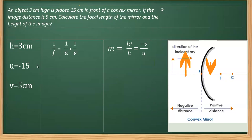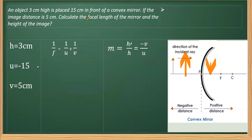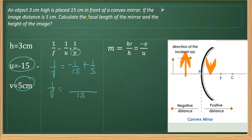We have to calculate the focal length using the mirror formula. Plugging in the values: 1/f = 1/v + 1/u, so 1/f = 1/5 + 1/(−15). The LCM is 15, giving 1/f = 3/15 − 1/15 = 2/15. By cross multiplication, f equals positive 7.5 centimeter. That is the focal length.